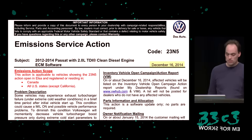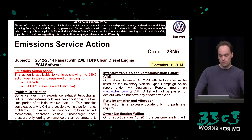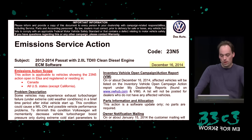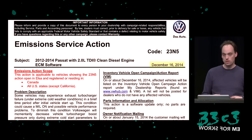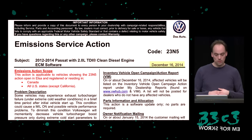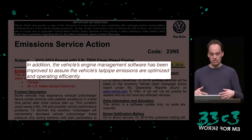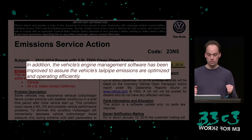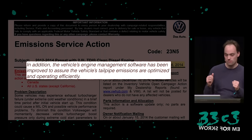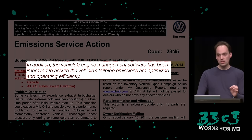Someone sent me an interesting document — an emission service action from December 2014, before Dieselgate was public, but while the EPA was already investigating Volkswagen. It described a recall requiring a software update and contained something very interesting: "the vehicle's engine management software had been improved to assure the vehicle's tailpipe emissions are optimized and operating efficiently." That sounded really fishy, so I was curious what exactly they changed in the software update.